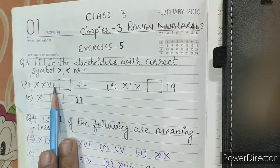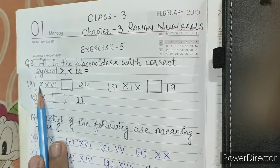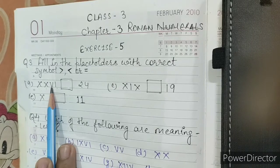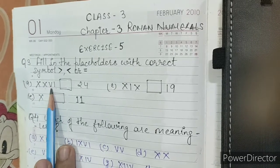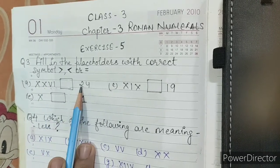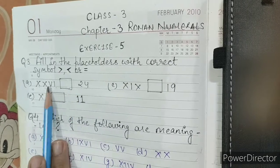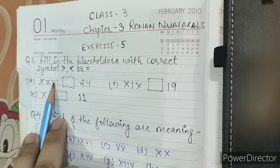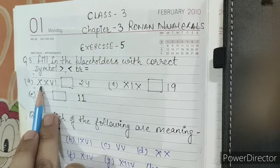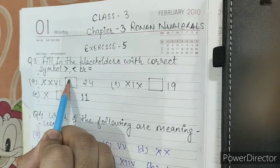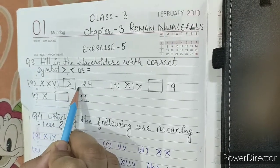XXVI means 10, 20 and 6, which is 26. And 24. Which one is greater, 26 or 24? 26 is greater than 24.